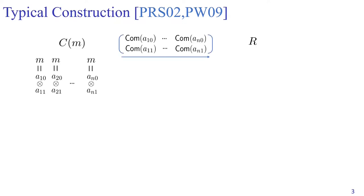Now let's take a look at a typical construction of extractable commitments. To commit a value, the committer first samples two random strings, A10 and A11, which export to the message M. This forms a secret sharing of the message M. Then the committer repeats this procedure for N times, where N is a security parameter.